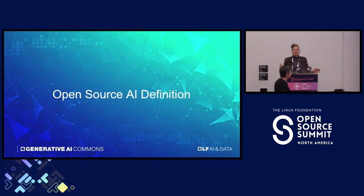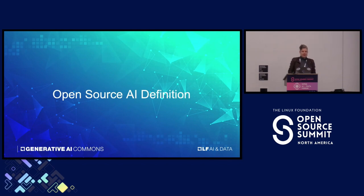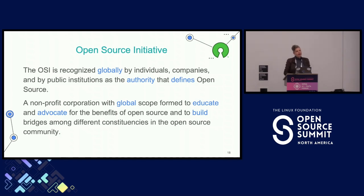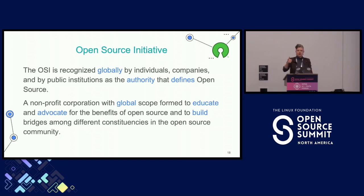Thank you so much. I'm going to talk about the Open Source AI Definition, sometimes called the OSAID. This is a project of the Open Source Initiative or OSI, which is basically the authority on defining open source and is currently the steward of the Open Source Definition. They evaluate open source licenses, and when that license is applied to a piece of software people can say they trust it as open source. They're a non-profit with a global scope and an educational and advocacy mission.